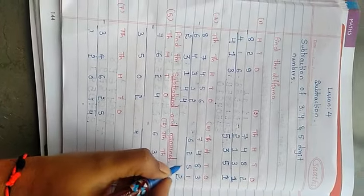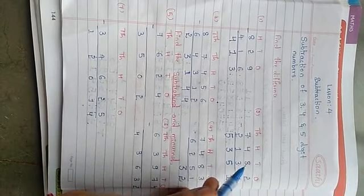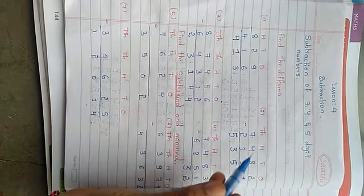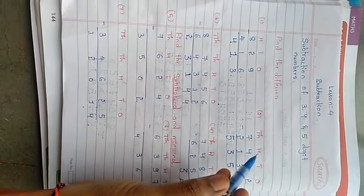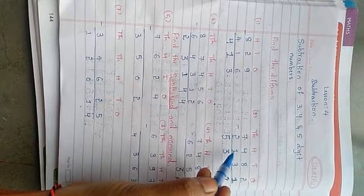3 minus 1 is 2, 8 minus 5 is 3. See how I have written orderly. You have to write the same way. You should not write 1 below 10. 1 is in the hundreds place, so you have to write 1 in the hundreds place only.